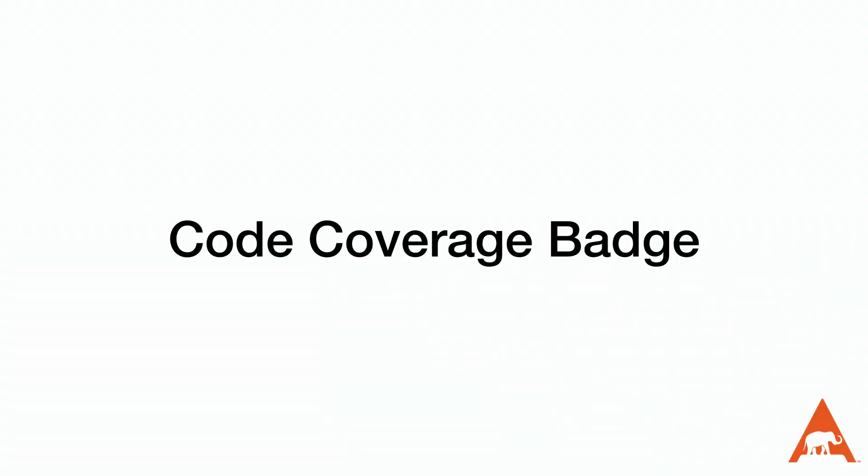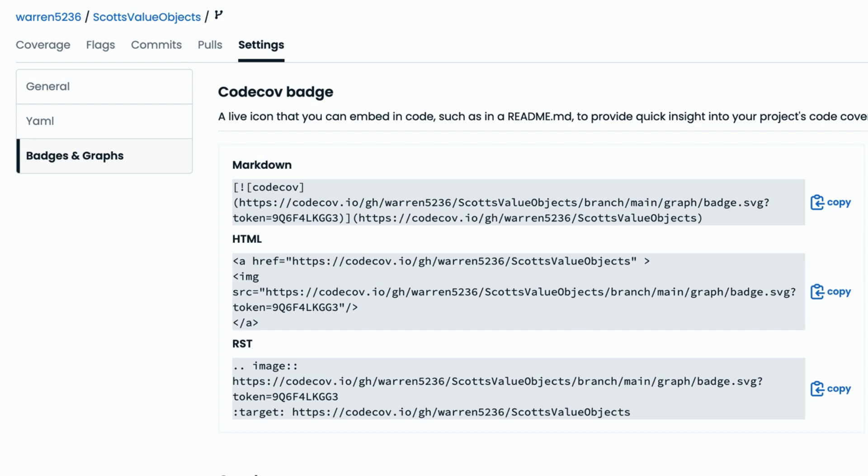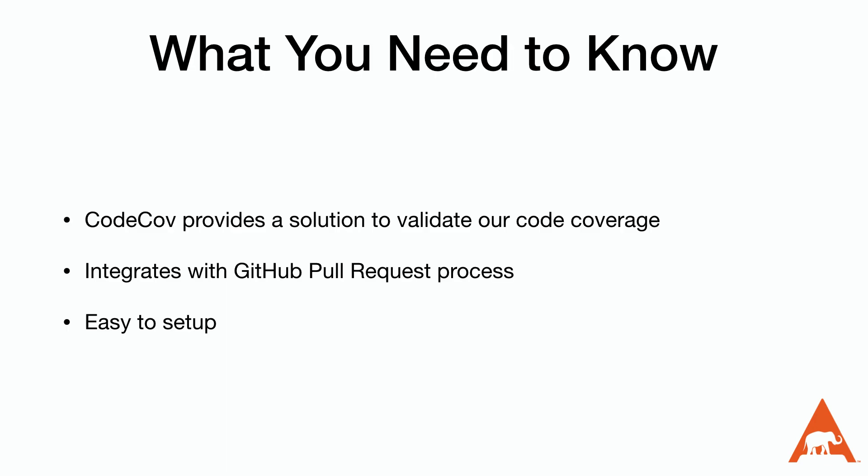If you spend any time looking at open source projects on GitHub, you'll notice a lot of them have these cool badges to show how well they're meeting their code coverage. We can have the same thing with CodeCup — we just need to copy this snippet into our readme.md file. As a recap, CodeCup provides a solution to validate our code coverage, integrates with the GitHub pull request process, and is easy to set up.